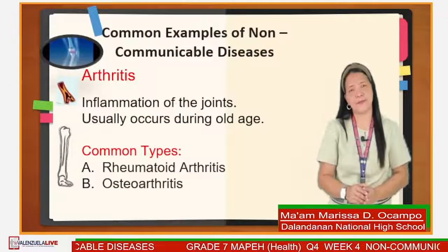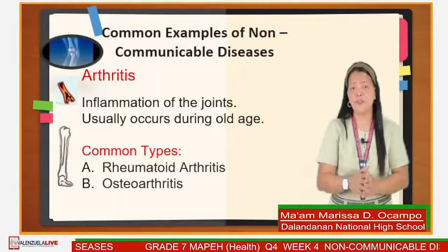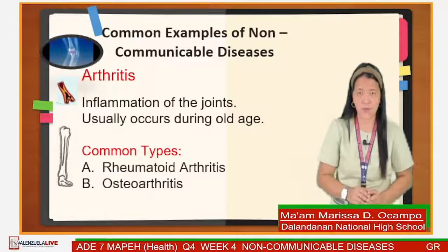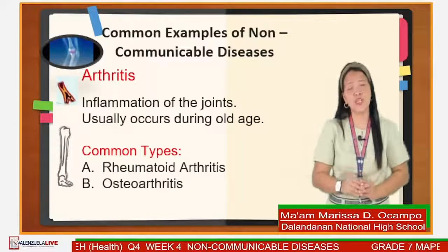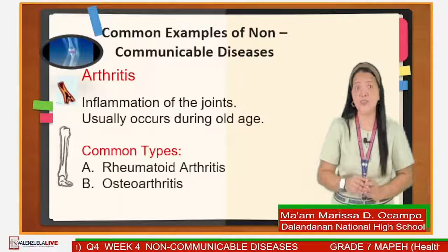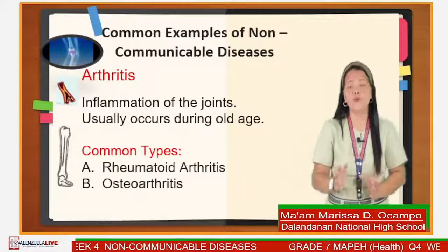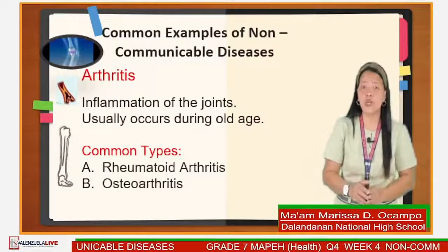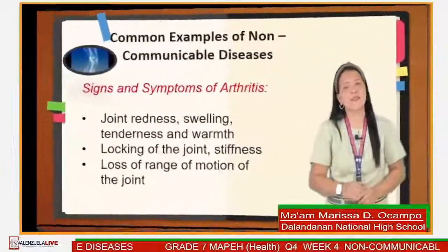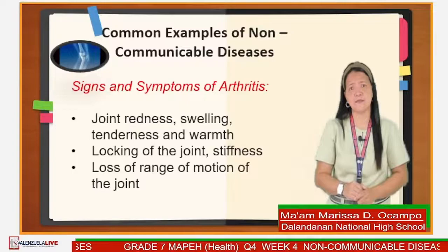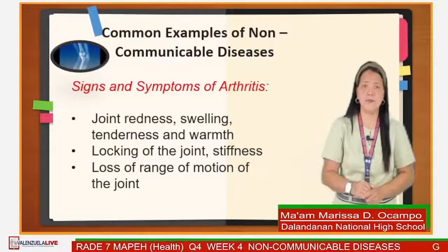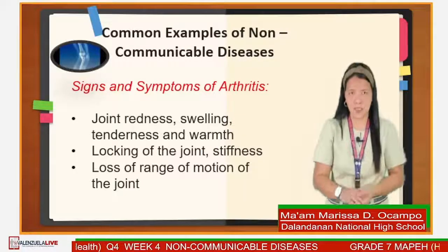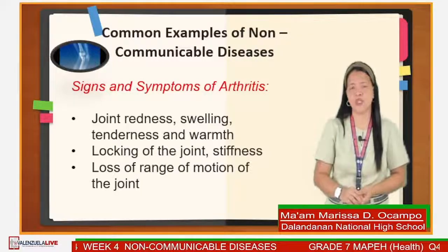Arthritis is the inflammation of the joints, usually occurring during old age. Common types are rheumatoid arthritis, which causes pain and swelling of many joints all over the body, and osteoarthritis, a disease of older people. Signs and symptoms of arthritis include joint redness, swelling, tenderness and warmth, locking of the joint, stiffness, and loss of range of motion of the joint.